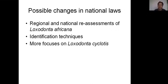What will happen in national law following this split listing? Regional and national reassessment of African elephants will be needed, as African elephant is such an unevenly and widely distributed species. With two kinds of African elephants recognized, identification techniques will be required in national laws to make seizure and prosecution possible. More focus in national laws — in range states, transit countries, and destination countries — will be placed on the conservation of forest elephants.